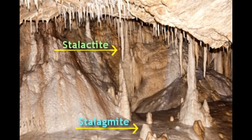Stalactites and stalagmites — what's the difference? The first fundamental difference between the two is the place of formation. Both are formed in caves; however, stalactites extend from the ceiling whereas stalagmites rise from the ground.